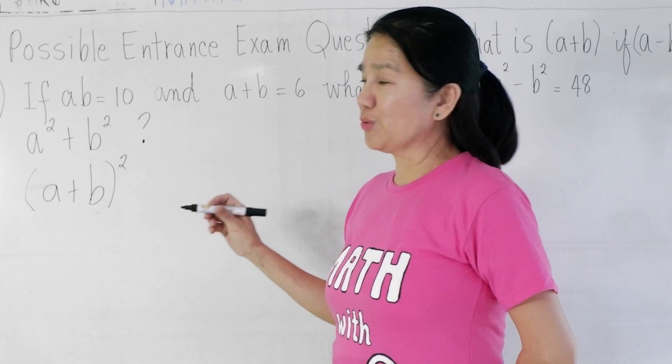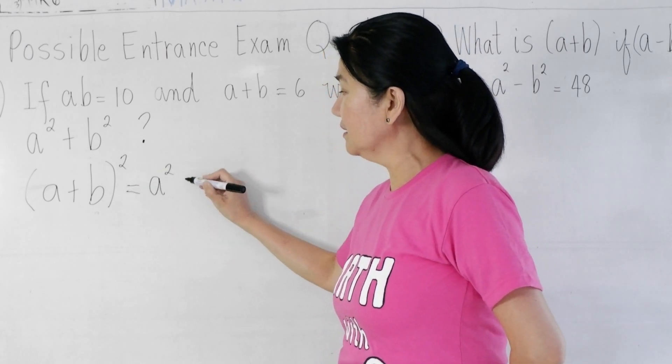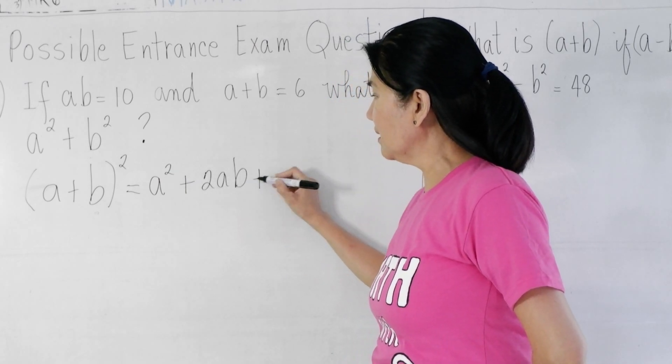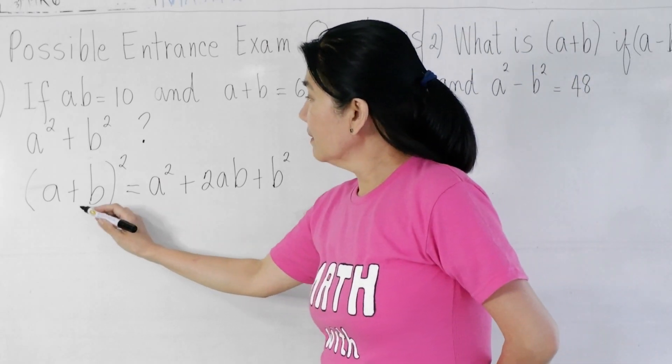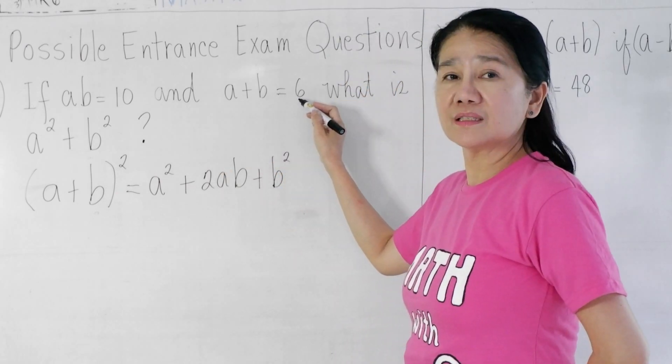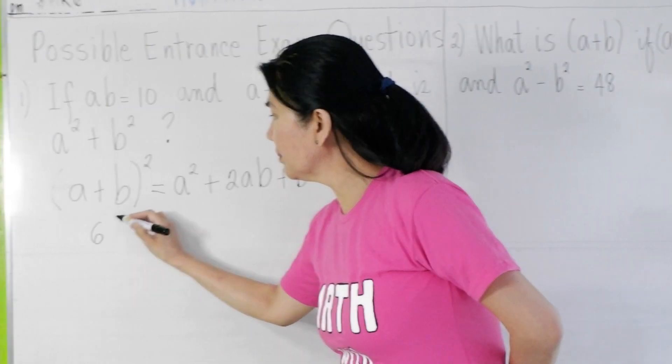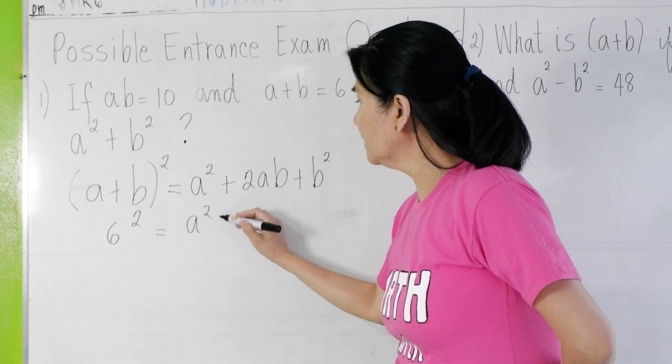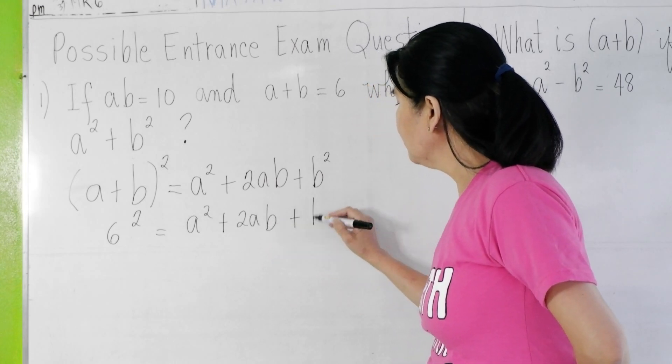A plus B squared is equal to A squared plus 2AB plus B squared. Now, A plus B is equal to 6, so you plug in the value of 6 here.